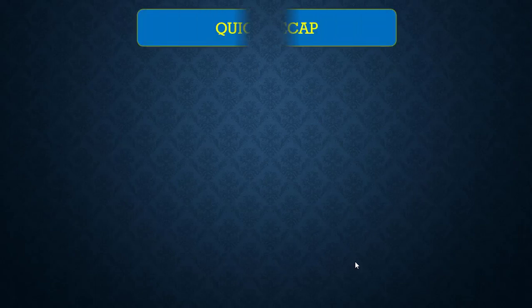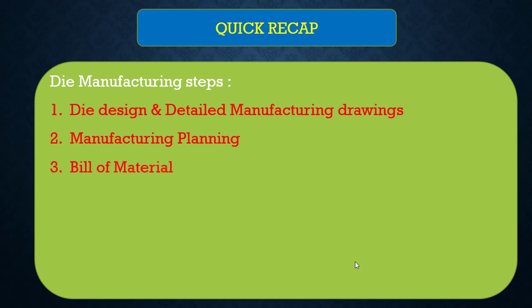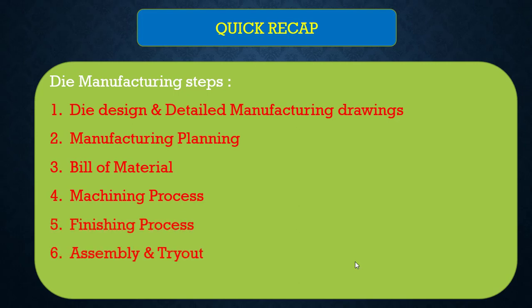Now let's have a quick recap. There are 7 stages of die manufacturing: 1. Die design and detail manufacturing drawings required as input. 2. Die manufacturing time planning to meet the customer schedule. 3. Bill of material preparation for categorizing in-house and bought-out parts. 4. Die machining process — 2D and 3D. 5. Finishing process of bench work and completing finishing activities. 6. Assembly and tryout to do the spotting and take initial samples. 7. Verifying sample quality through visual inspection and CMM or scanning machine.